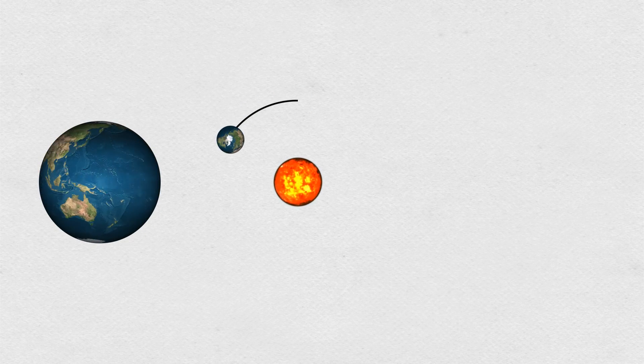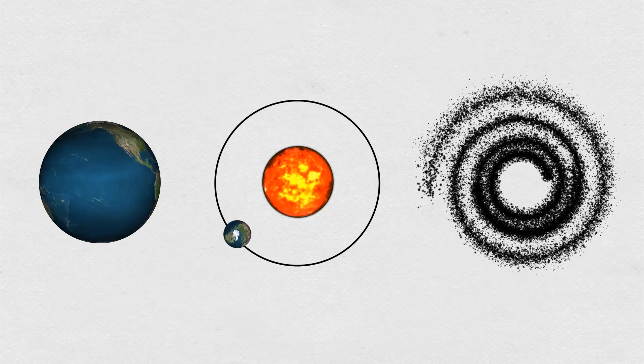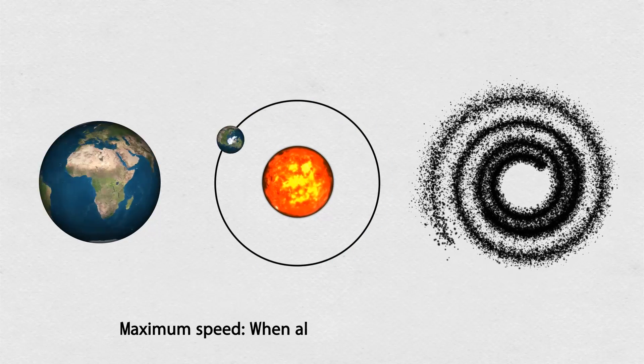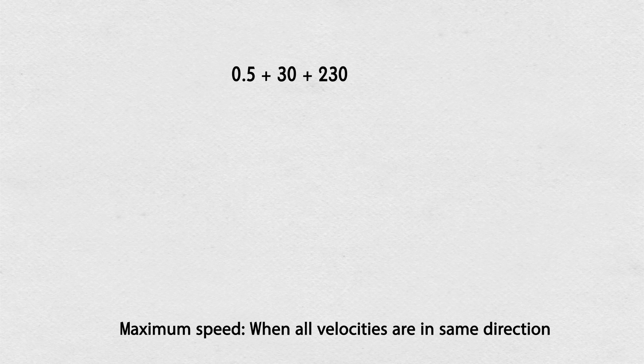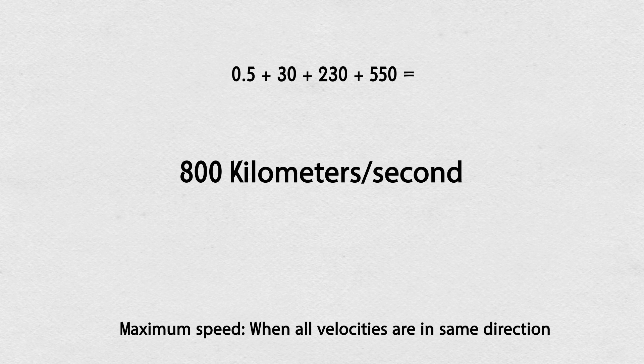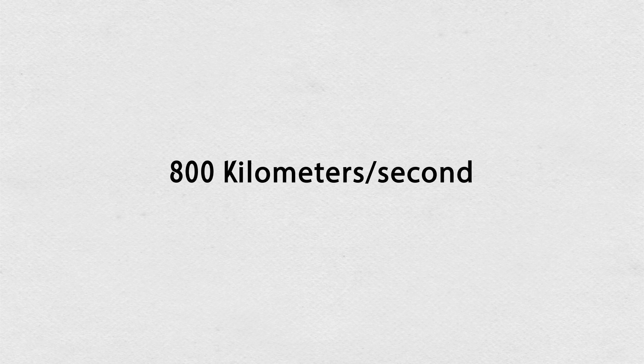Now, adding all these speeds up can be tricky because of the different directions of each speed. To keep things simple, the maximum speed can be found by simply adding everything up. This comes to about 800 kilometers per second.